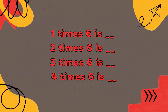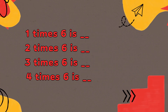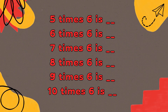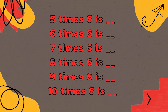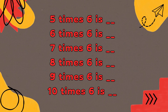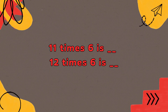1 times 6 is 6, 2 times 6 is 12, 3 times 6 is 18, 4 times 6 is 24, 5 times 6 is 30, 6 times 6 is 36, 7 times 6 is 42, 8 times 6 is 48, 9 times 6 is 54, 10 times 6 is 60, 11 times 6 is 66, 12 times 6 is 72.